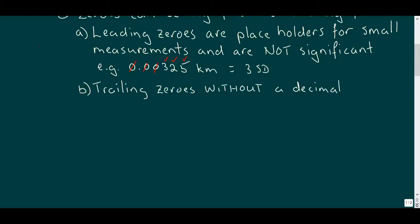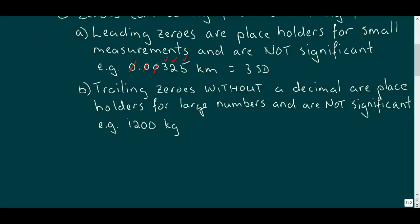Trailing zeros when there's no decimal are also deemed to be not significant because they're just placeholders for large numbers. For this case, let's consider a measurement of 1,200 kilograms. Again, the one and the two are non-zeros, so they're significant. But those two trailing zeros just tell us how large the number is and don't provide any information about the value. So this measurement would have two sig digs.